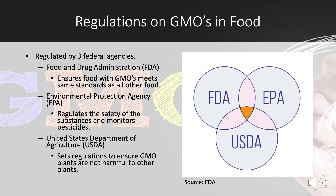The third major organization is the Department of Agriculture, the USDA. The USDA's job when it comes to GMOs is to protect agriculture against pests and diseases. They make sure the GMO plants are not harmful to all other plants.